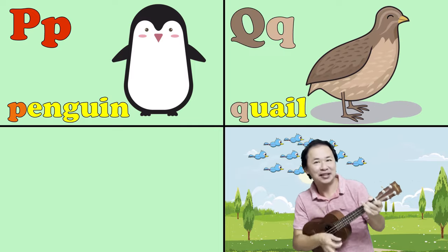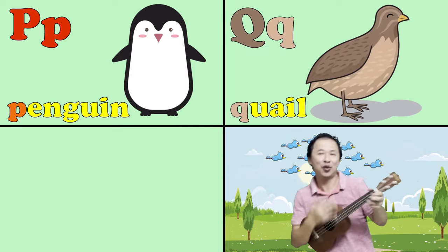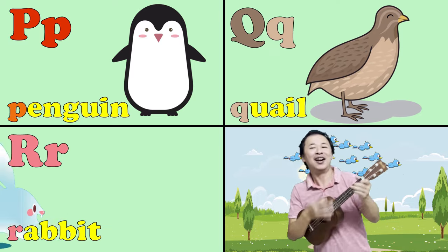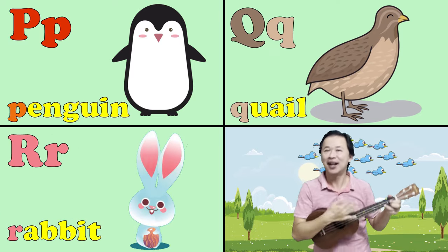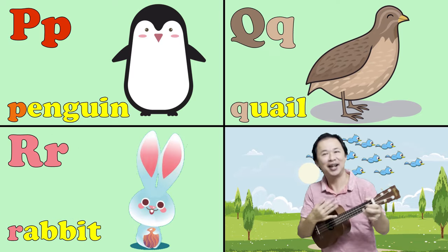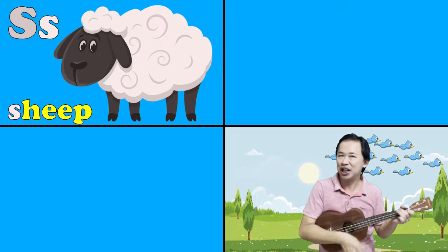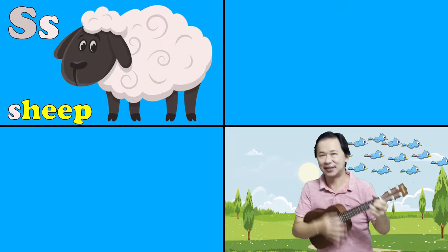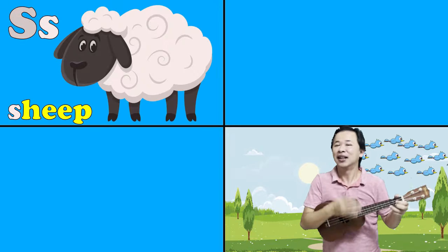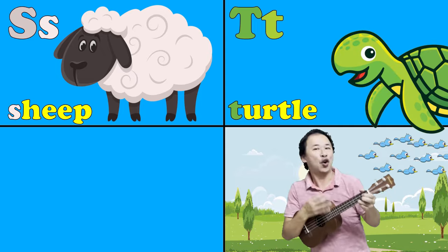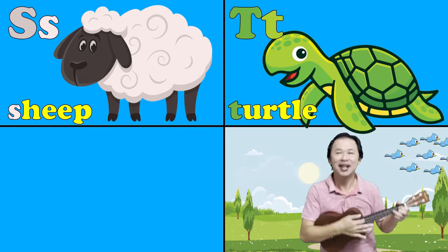Q is for quail, qu. R is for rabbit, r. S is for sheep, s. T is for turtle, t.